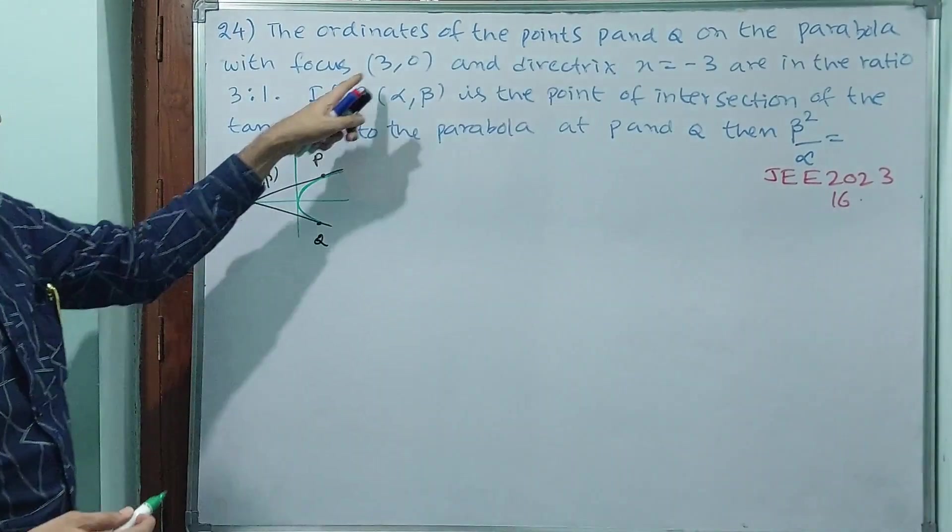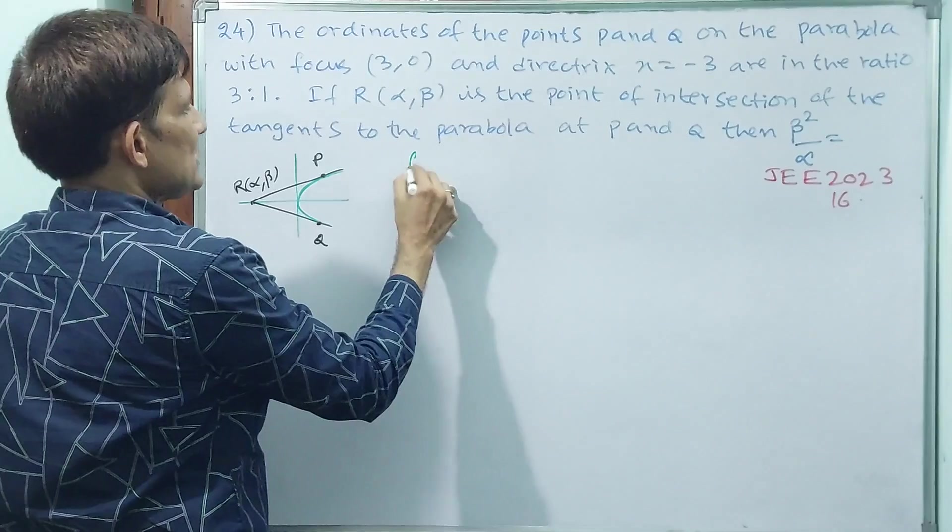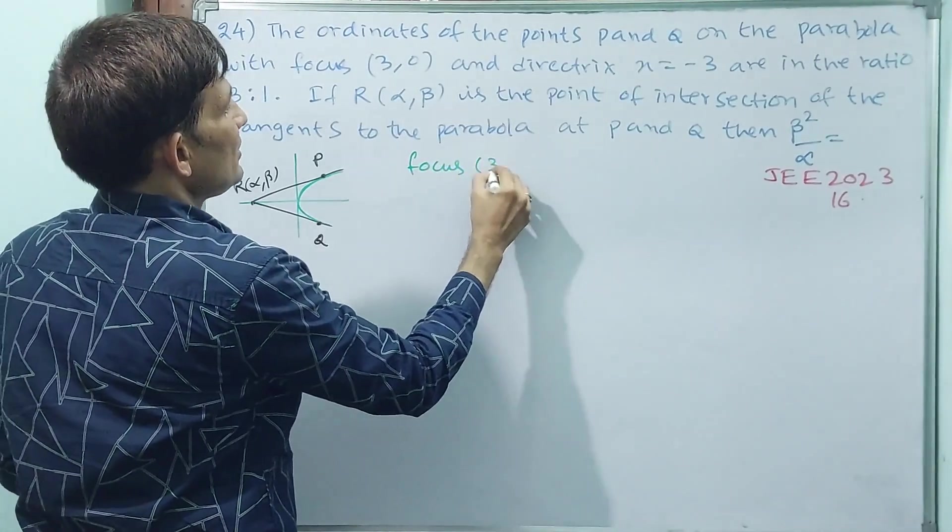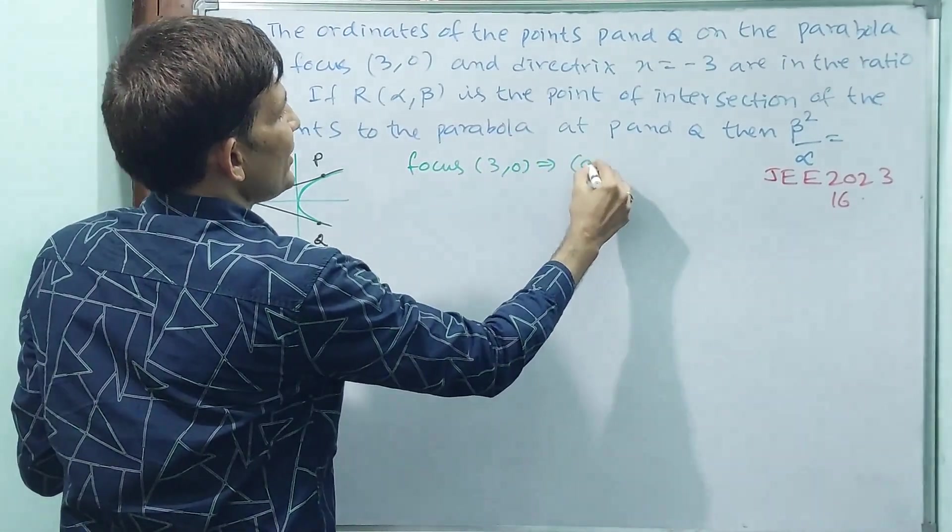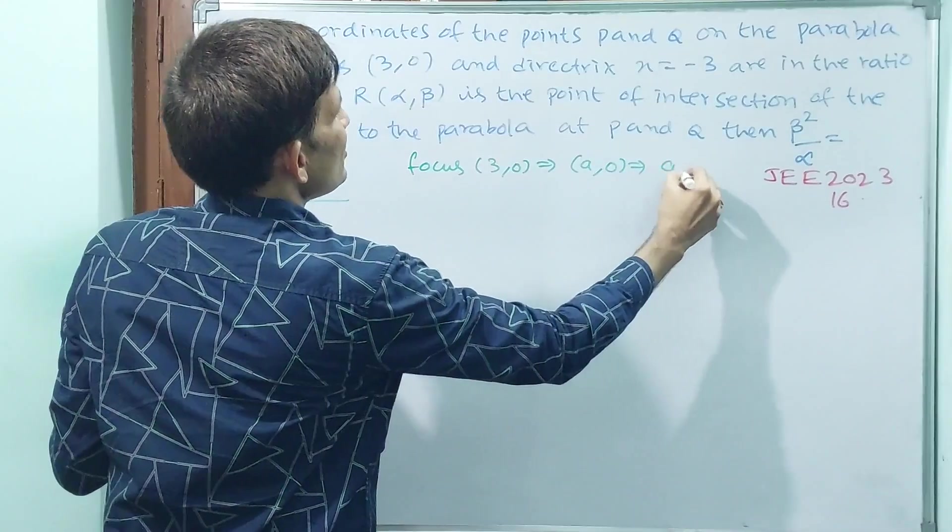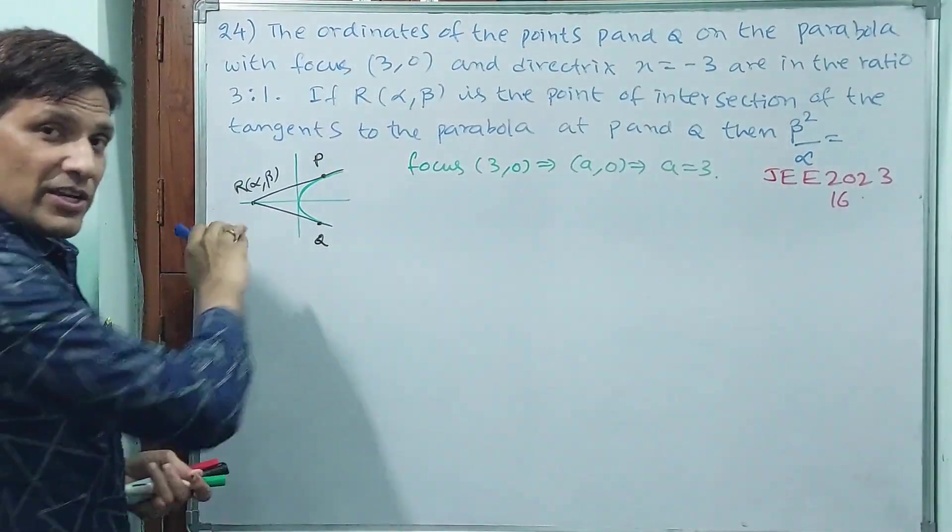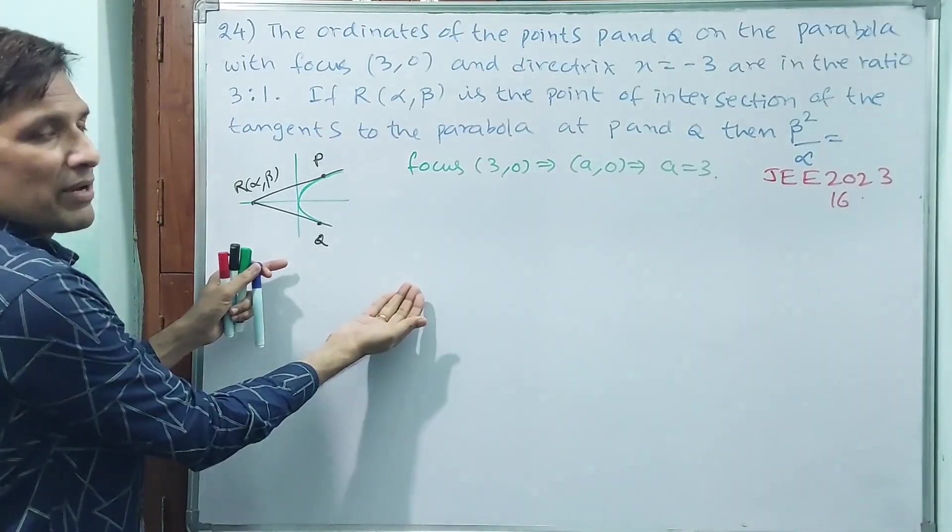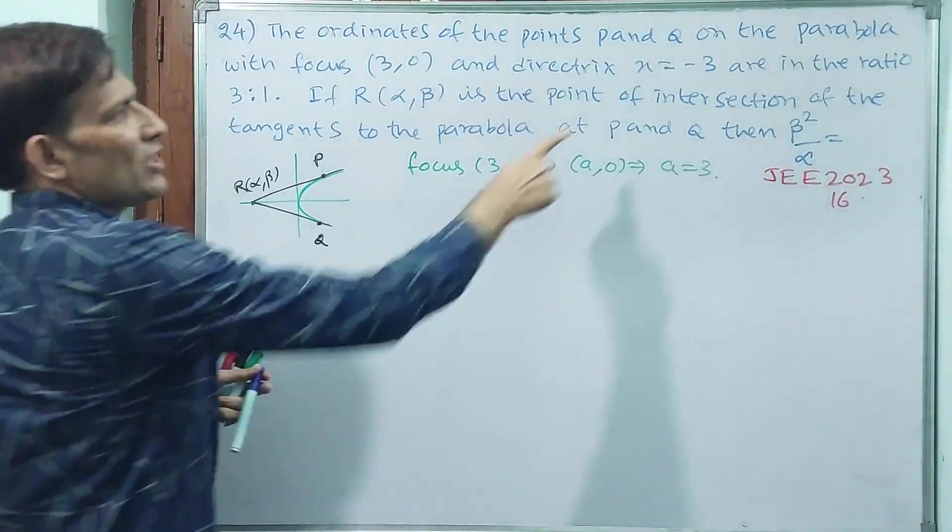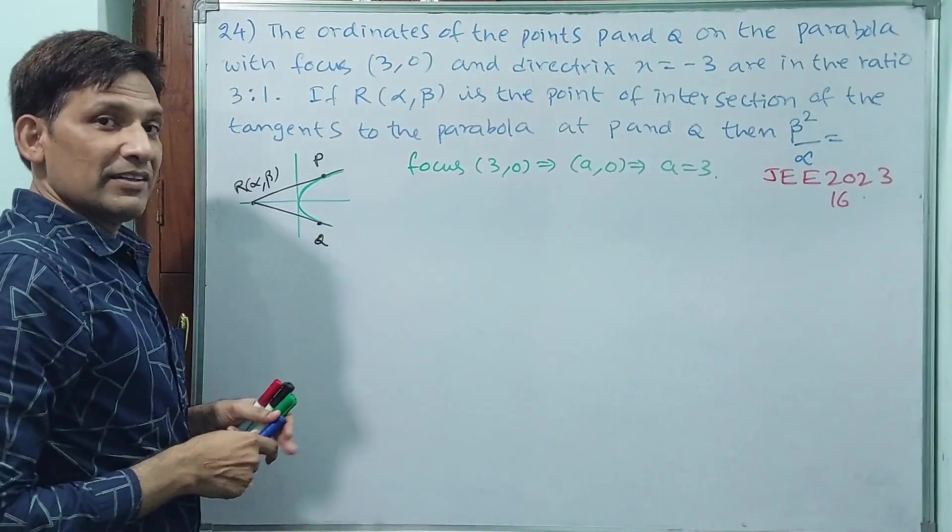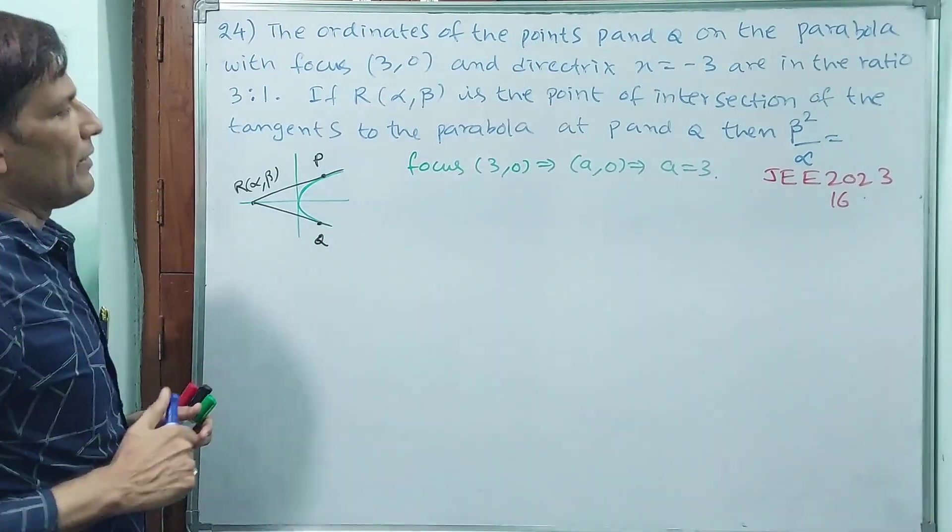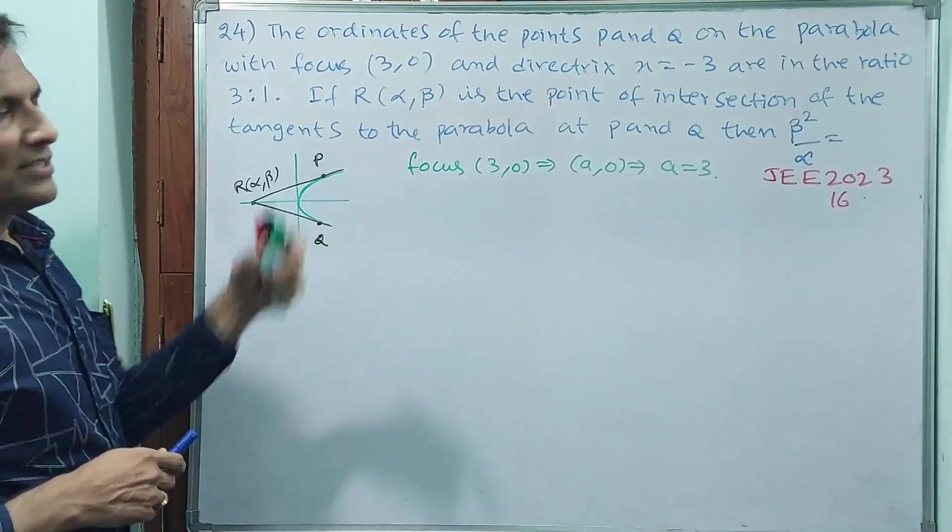Here, what I want to say: when we are having focus (3,0), that implies a = 3. If a is 3, automatically directrix will be x = -3, same thing they have given. That is why it is matching, no problem. a is 3, is one thing.